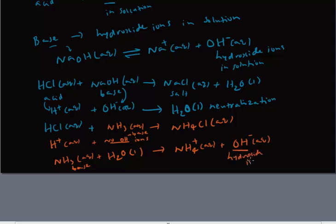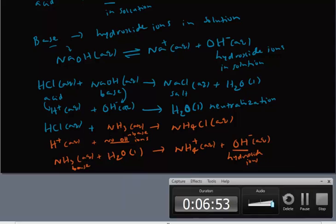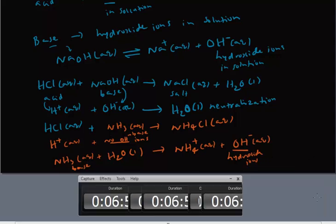So if you use the example of HCl reacting with ammonia, you may not be able to explain that ammonia is an Arrhenius base because you don't see OH⁻ ions. But if you use the example of ammonia in water, you can see the formation of hydroxide ions, and therefore we can call ammonia an Arrhenius base.